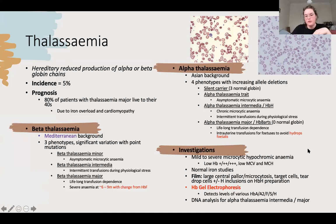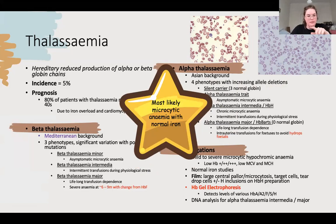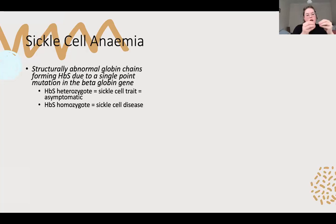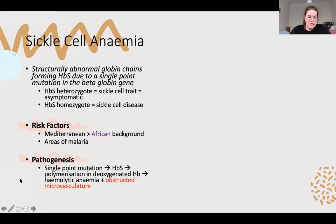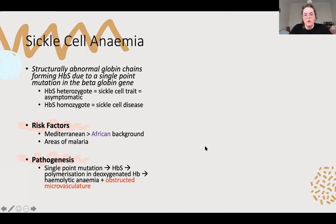Sickle cell anaemia: one single mutation making HbS. You can be heterozygous, which is thought to be protective in areas with malaria, or homozygous where you have sickle cell disease. Main risk factors are Mediterranean and African background, as well as Indian heritage. Because the cells are deformed, they don't go through capillaries well and form clots at the bases of capillaries. So you'll get symptoms in hands, tummy, places with small vessels - that is a sickle cell crisis, with acute pain and haemolysis.